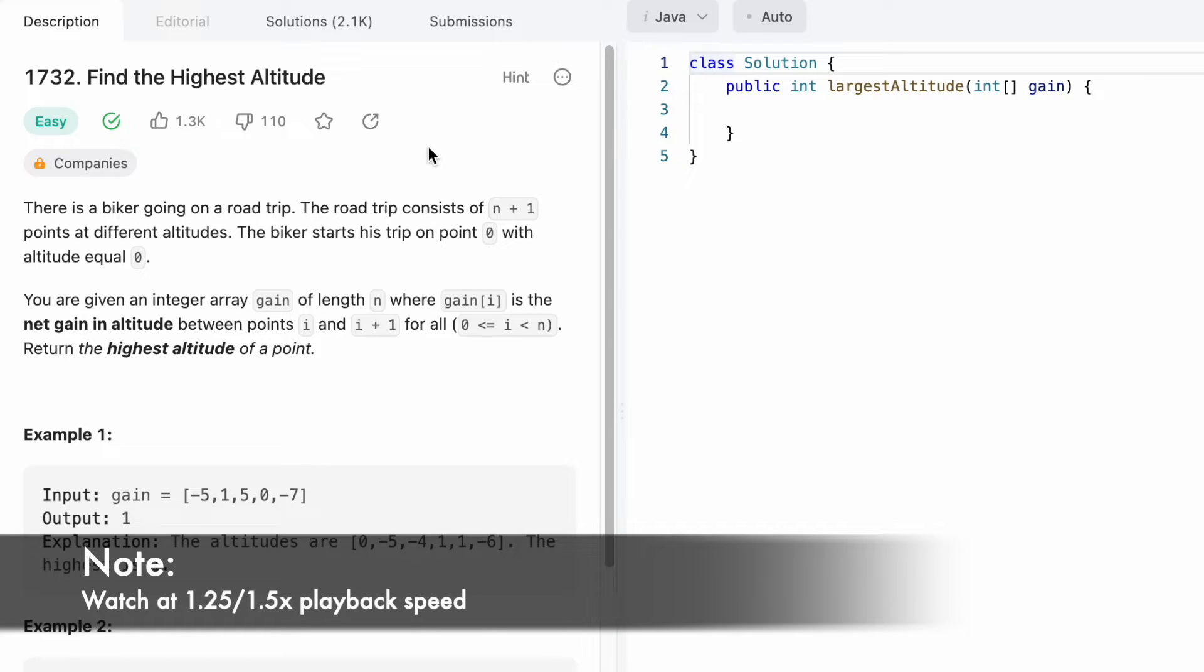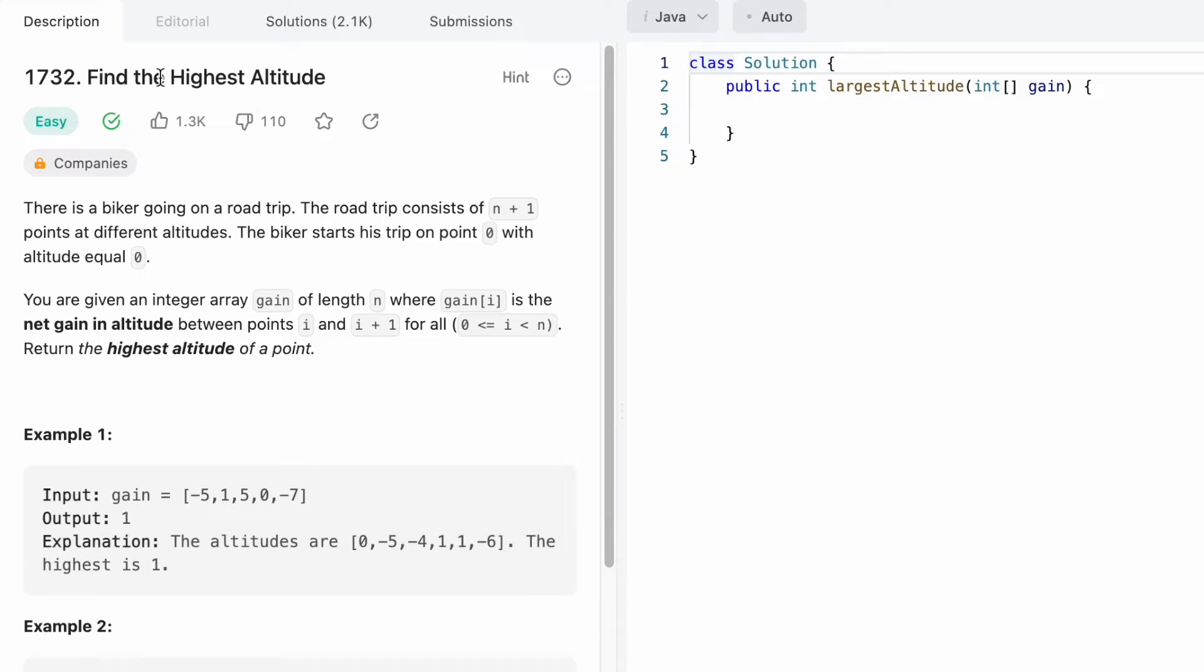Hey guys, welcome to the channel. In today's video, we're going to look at a LeetCode problem called Find the Highest Altitude. In this question, we are given a gain array which represents the net gain in altitude. A biker starts from point zero with altitude equal to zero.